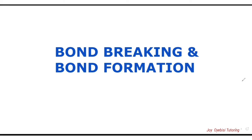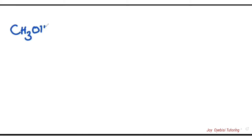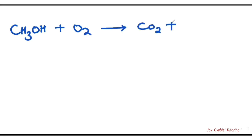The first question we have here is to calculate the enthalpy change for the reaction between methanol and oxygen. The first step is to write up the entire equation and make sure it's balanced — that's very important. So we have CH₃OH as the molecular formula for methanol, plus oxygen, that will give us CO₂ plus water.